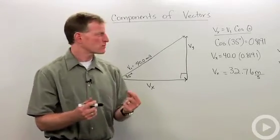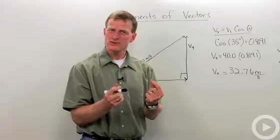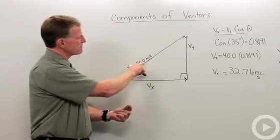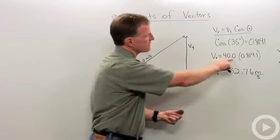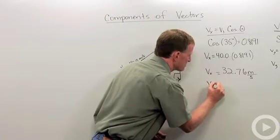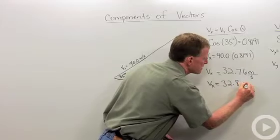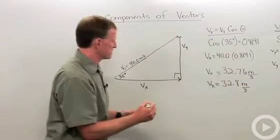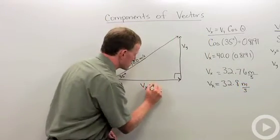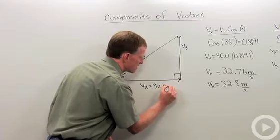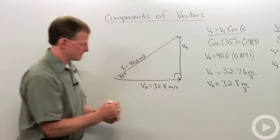Now, is that perfect? Well, if we want to go with significant figures, we have three significant figures in our initial value. So let's go ahead and convert that to vx equals 32.8 meters per second. So my vx equals 32.8 meters per second.